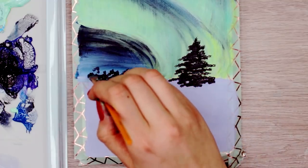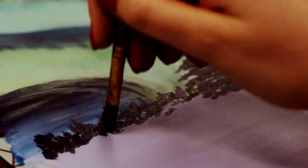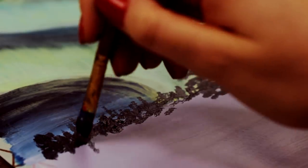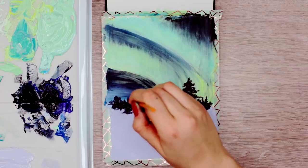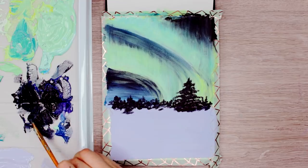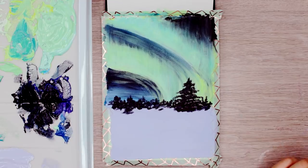Repeat the step with the other trees in the background. Here, I just randomly dabbed on the paint while making sure I create different heights. And this is how it looks now. A little bit messy, but we will make it shine a little bit later once the paint has dried.